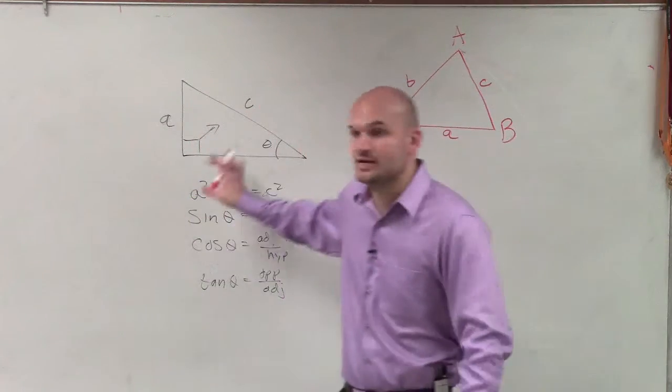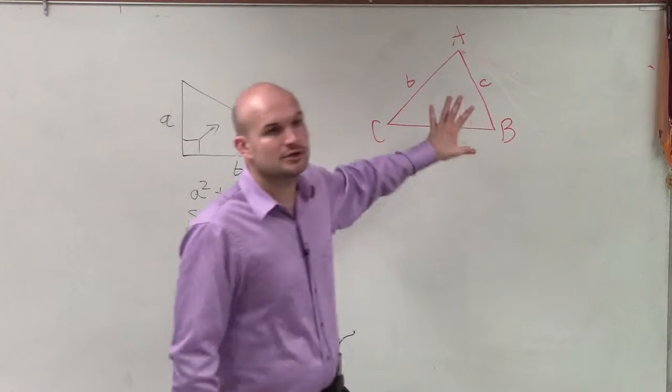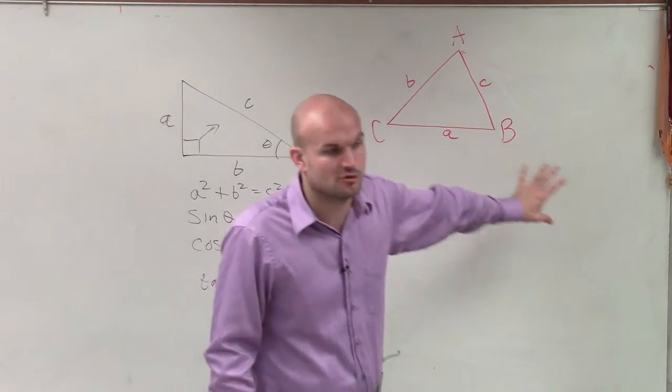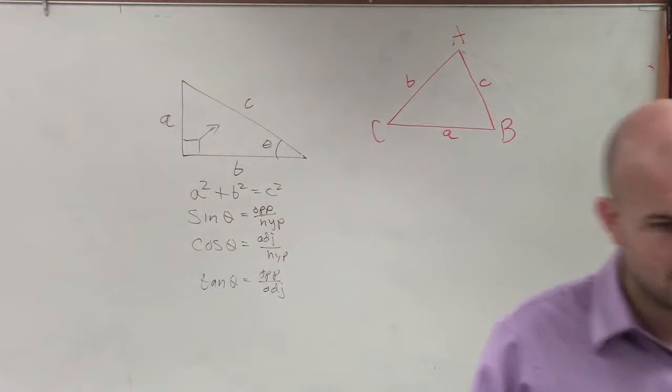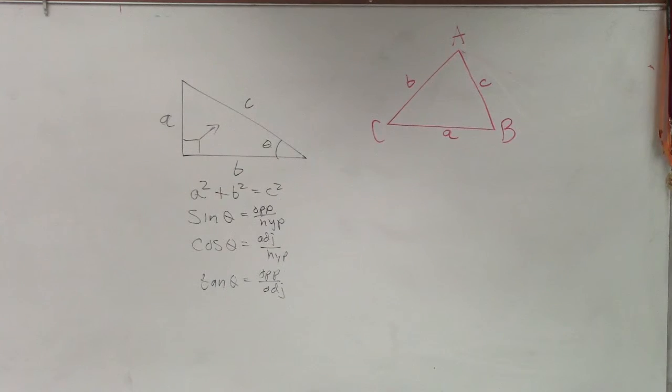So we don't have the properties of the right triangle anymore, but we're going to learn new properties of our acute oblique triangle. All right? Now, the next one.